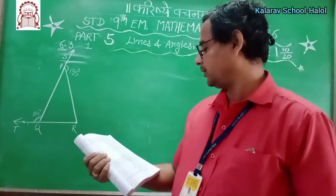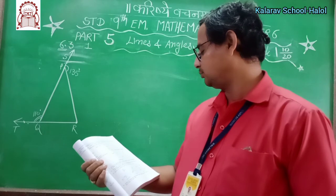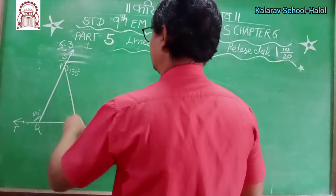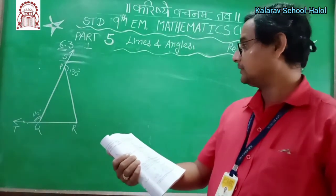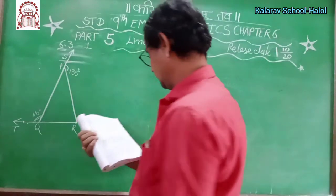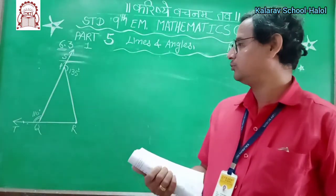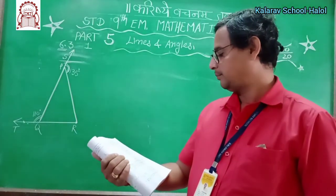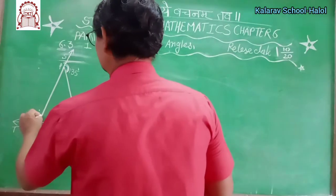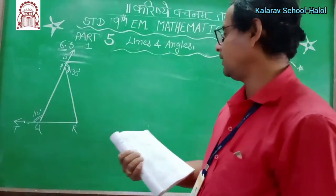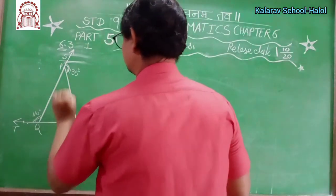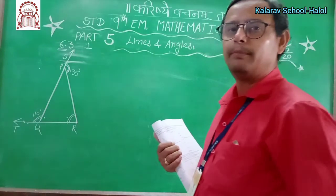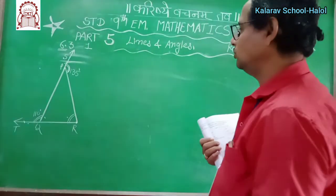Now see this figure in Exercise 6.3. All the sums are in the same pattern. Here QP and QR of triangle PQR are produced to points S and T respectively. Angle SPR is 135 degrees — this exterior angle is 135. Angle PQT is 110 degrees. You have to find the value of angle PRQ.